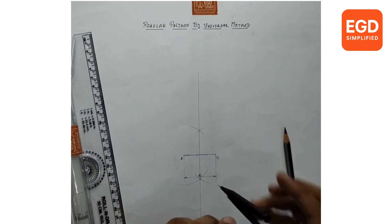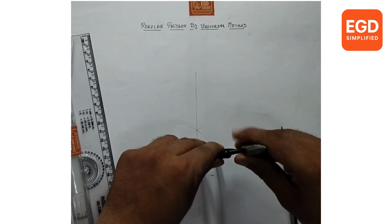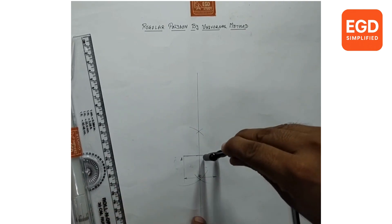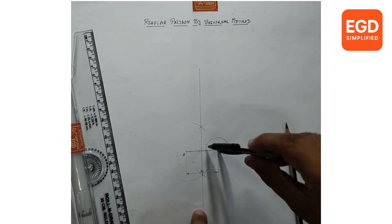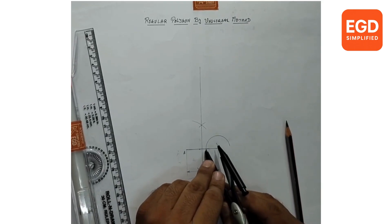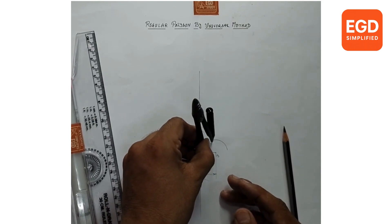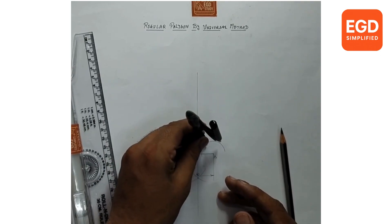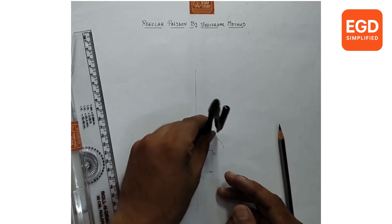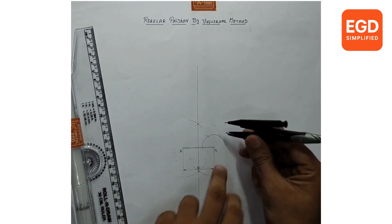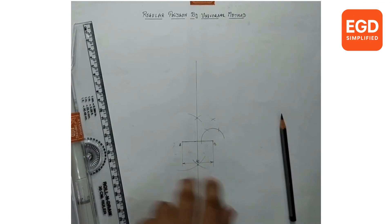Now take a 90 degree angle from point B. Draw 90 degrees at B point using arcs. Draw one arc from B; from the intersection of that arc, draw another arc. That gives us 60 degrees. Another arc gives 120 degrees, and the bisector of 60 and 120 gives us a 90 degree angle.